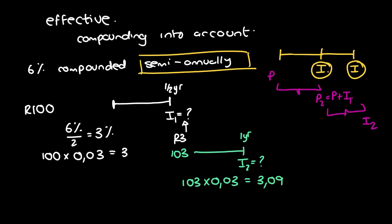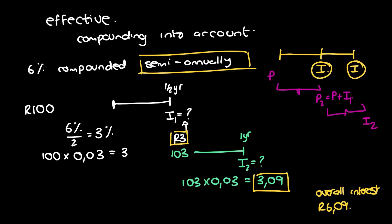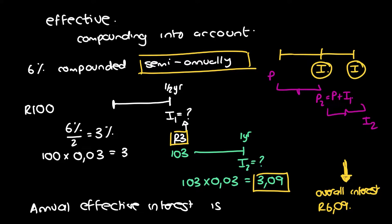So we have 3 grand interest at the first period and 3.09 grand at the second, giving an overall interest for the year of 6 grand and 9 cents. The 6.09 grand helps us determine the annual effective interest rate: 6.09 grand divided by the 100 grand, times 100 to get it as a percentage. So the annual effective interest rate is 6.09%.